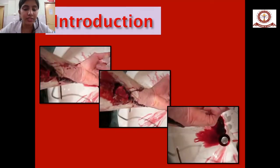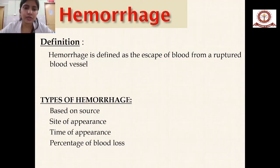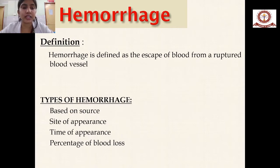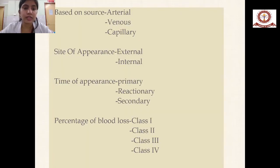Coming to the introduction: Hemorrhage is defined as the escape of blood from a ruptured blood vessel. Hemorrhage can be classified into four types based on source, site, time of appearance, and percentage of blood loss. Based on the source, it can be classified as arterial, venous, or capillary.